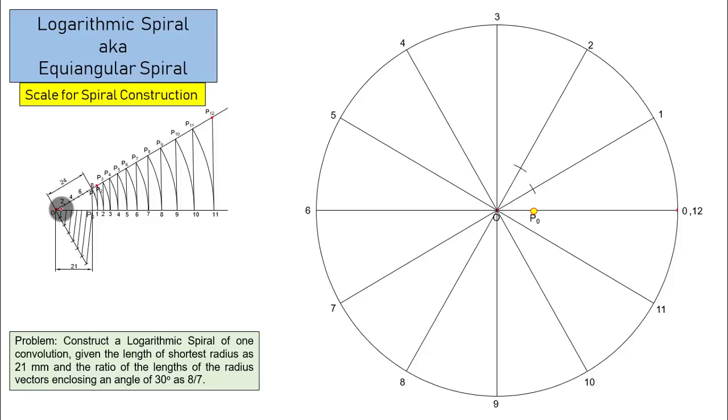Now with o, p3 as the radius, and o as the center, cut an arc, and that's going to give you p3. In the same manner, you can have the remaining points. And finally, p12 is going to, well, it's going to be here only.